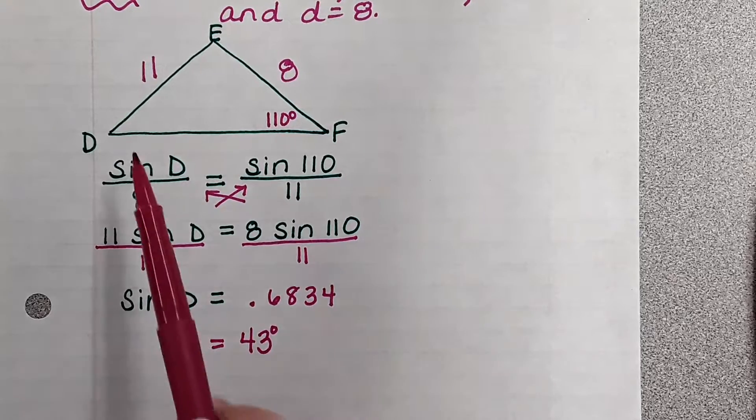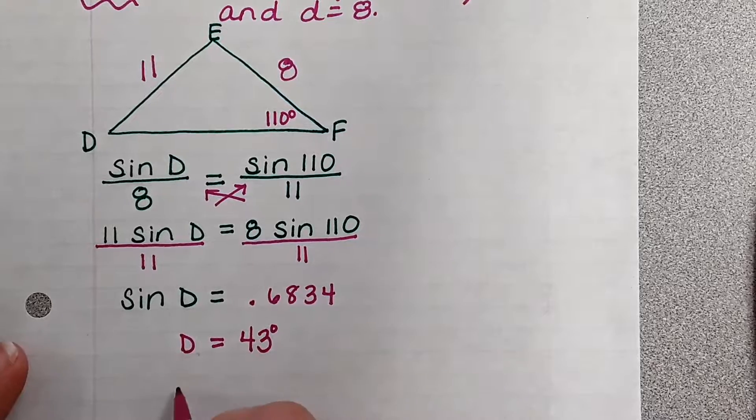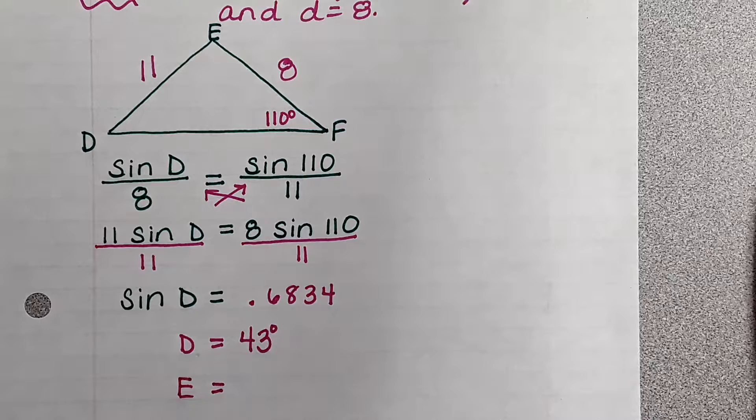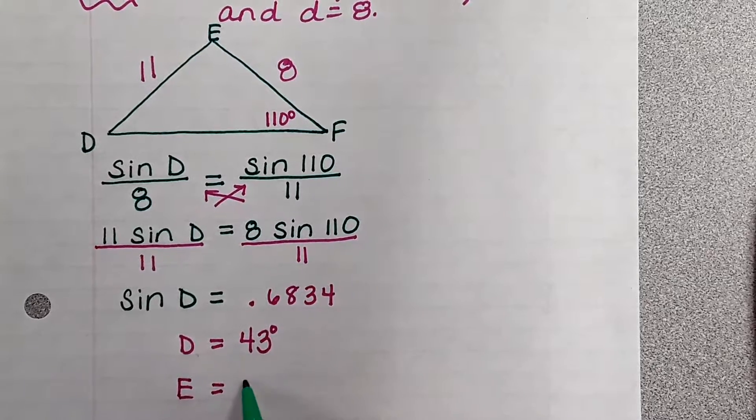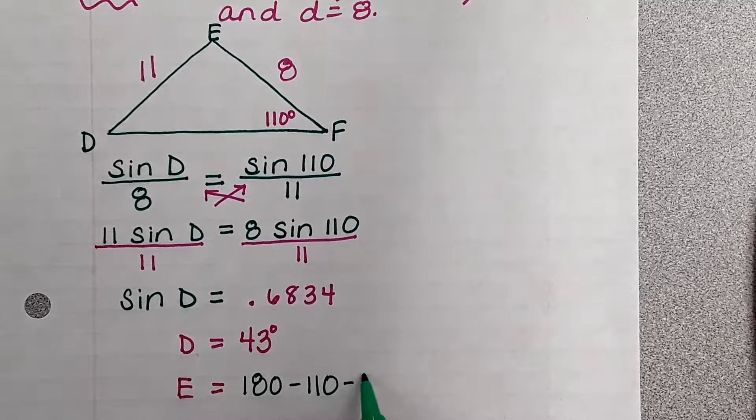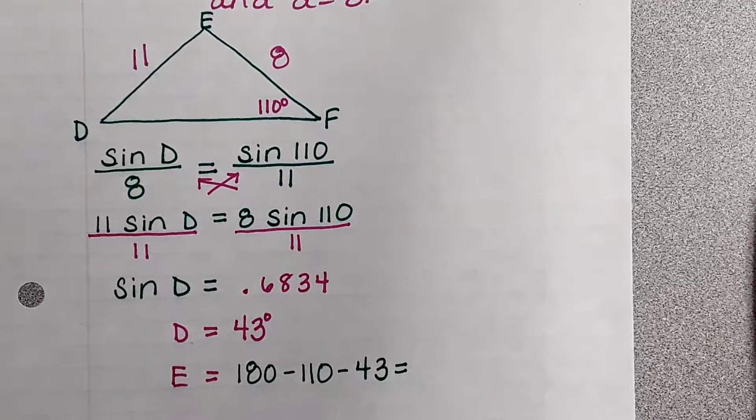I found angle D, now I can find angle E. 180 minus 110 minus 43 equals what is it? 27 degrees.